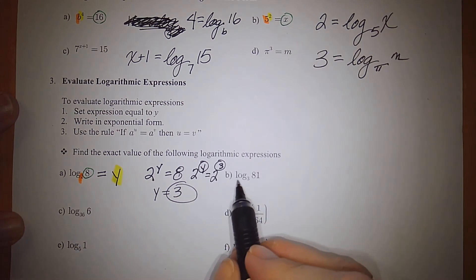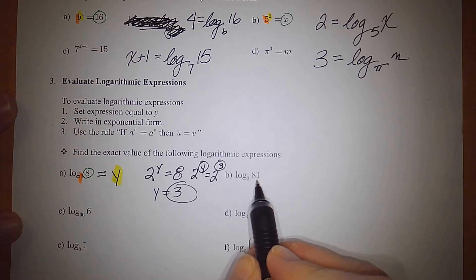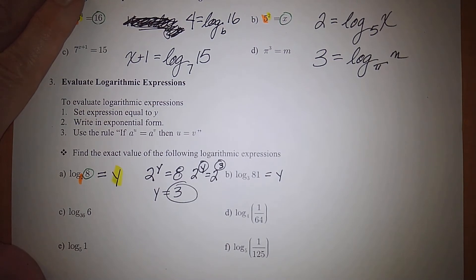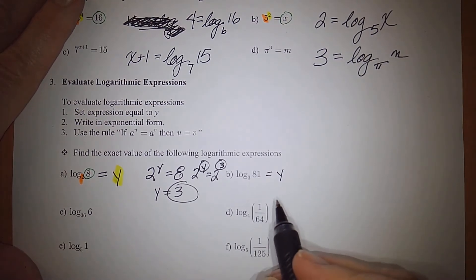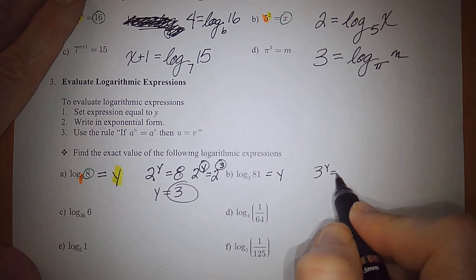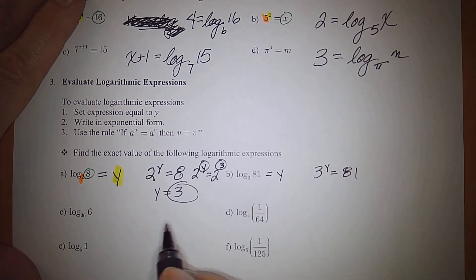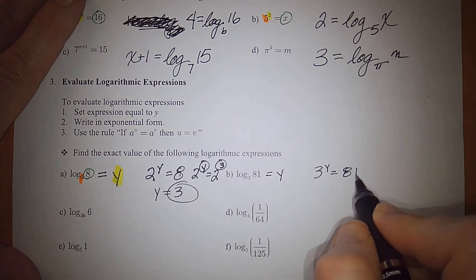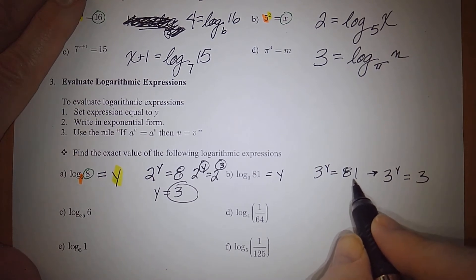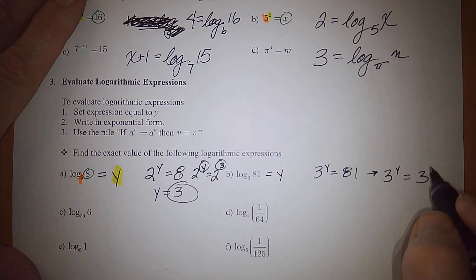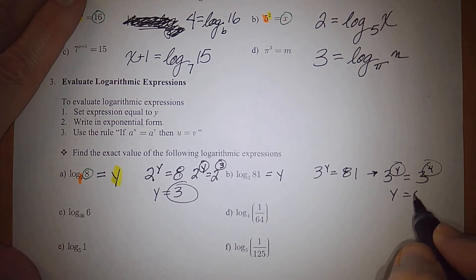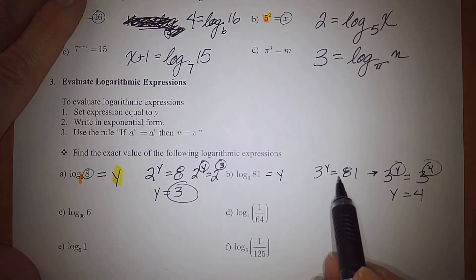Let's try log base 3 of 81. Set it equal to y and write in exponential form: 3 to the y equals 81. Setting the bases equal: 3 to the y equals 3 to the 4th power, since 81 is 3 to the 4th. Therefore y equals 4.